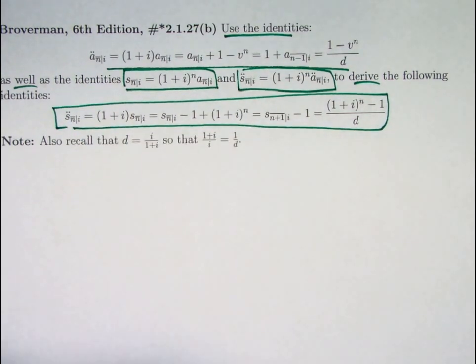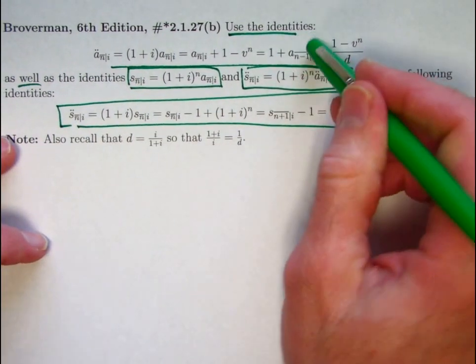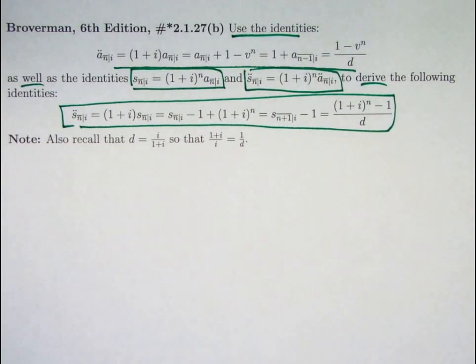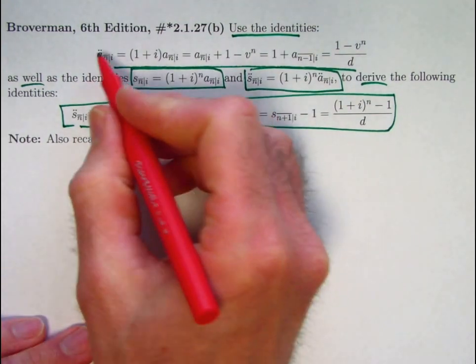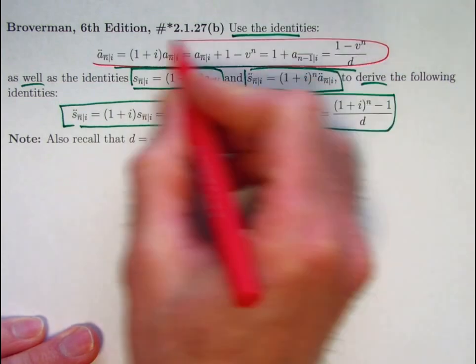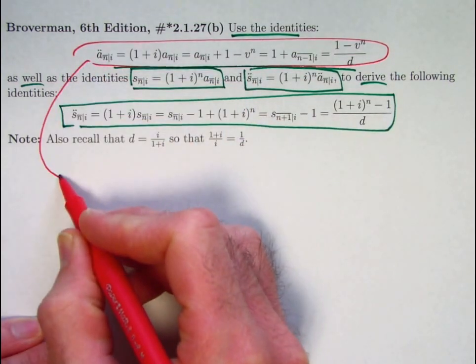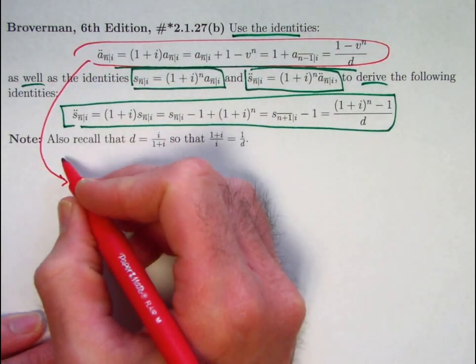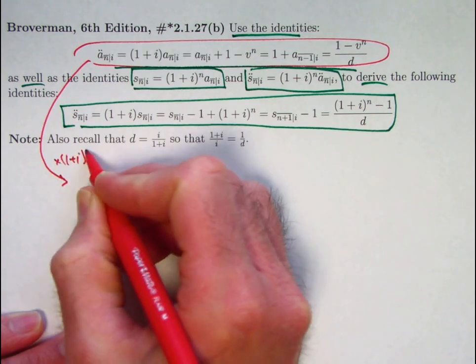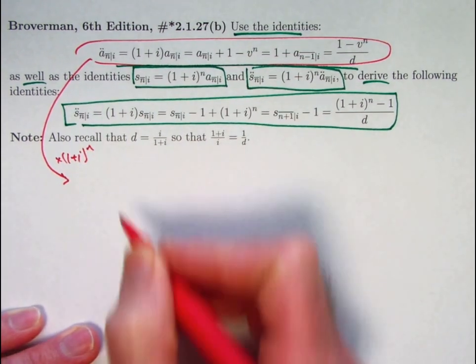The use of these identities is essentially accomplished by the following. Take this string of equations and multiply everything by 1 plus i to the n. What happens when you do so?